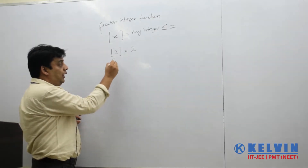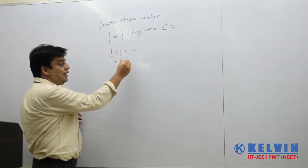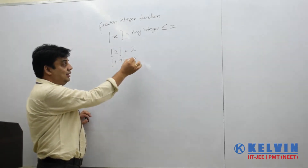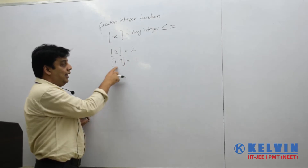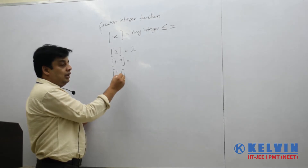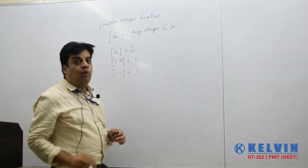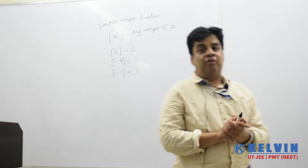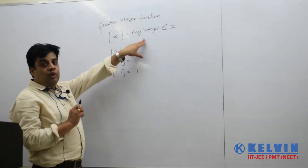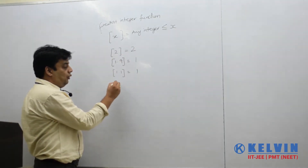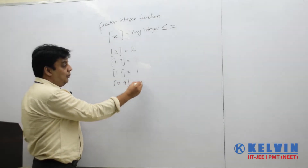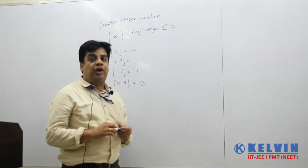When I talk about 1.9, the Greatest Integer of 1.9 — since 1.9 is not equal to any integer, the integer just less than it is 1. So Greatest Integer of 1.9 is 1. Similarly, Greatest Integer of 1.1 is again 1. We have to find the integer which is just less than or equal to that number. For 0.4, the integer just less than or equal to 0.4 is 0, so Greatest Integer of 0.4 is 0.